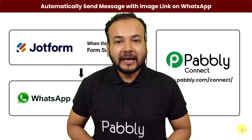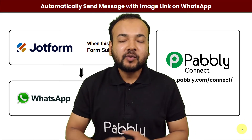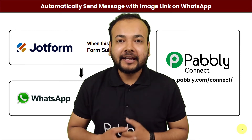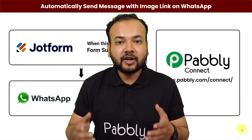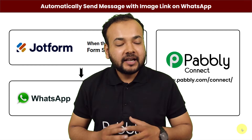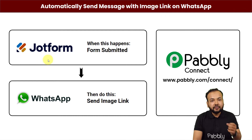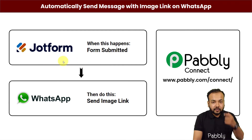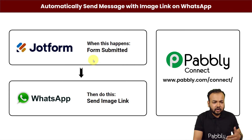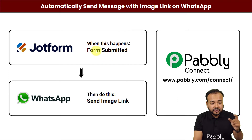Welcome back to Pably. In this video I'm going to show how you can automatically send image links on WhatsApp. Here you can see on my screen this is the flow of our automation. We have used Jotform to create an inquiry form — in place of Jotform you can use any other application like Google Form, Typeform, or Pably Form Builder. As and when any person submits this form, we are going to send an image link to that same person automatically on WhatsApp.